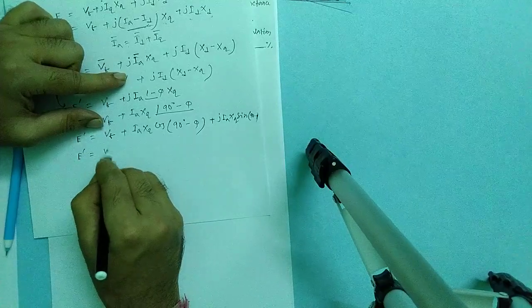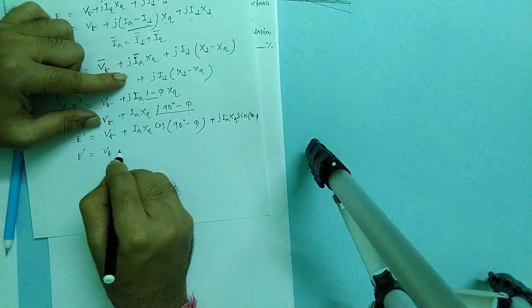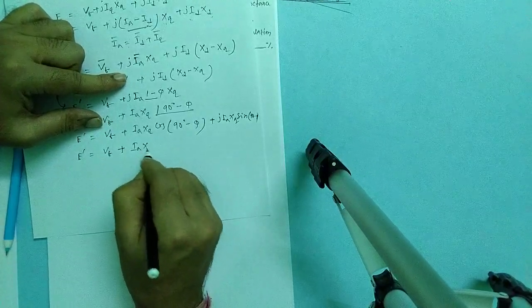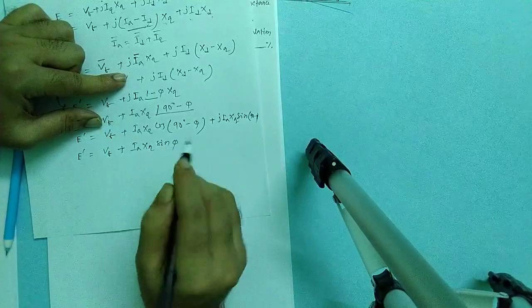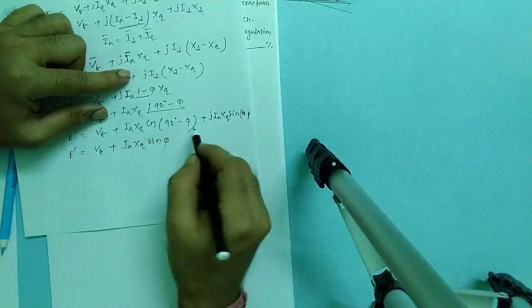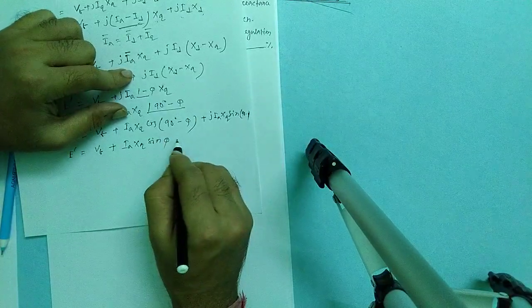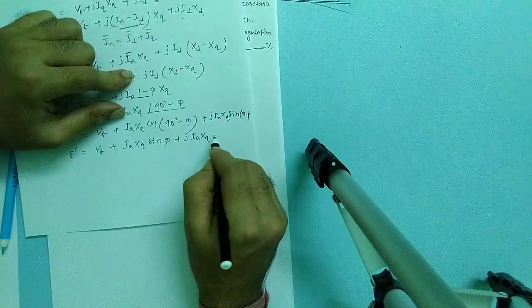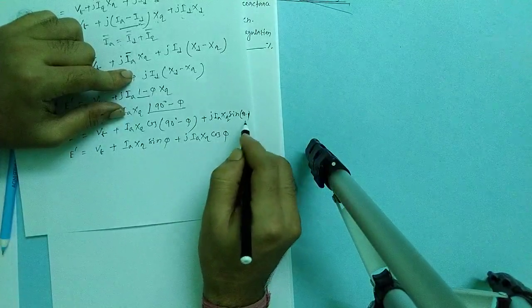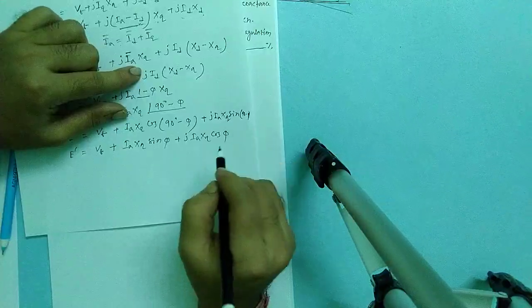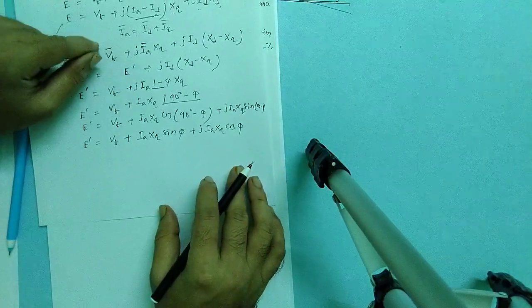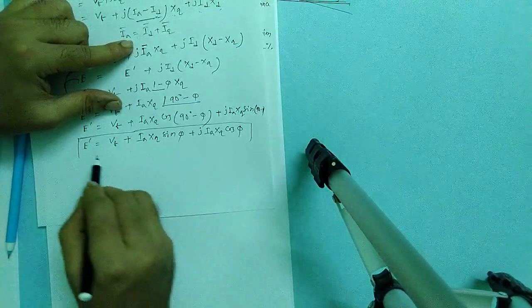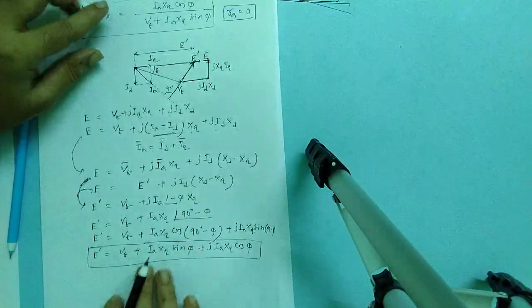From here we can write it as finally V_t plus i_a X_q sin of phi, because cos of 90 minus phi is sin of phi, plus J of i_a X_q cos phi. Sin of 90 minus phi is just cos phi. So my E' dust is like that. See over here one thing.